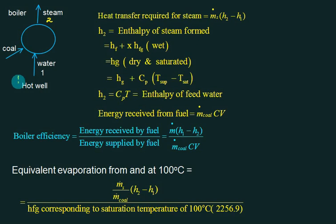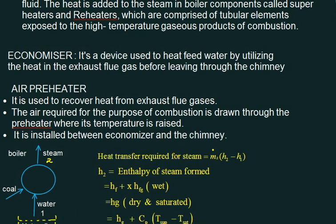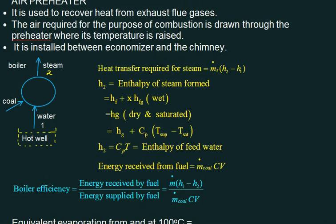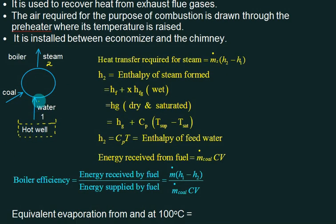The inlet is called the hot well, because the temperature at the inlet to the boiler is more than that of normal water — the economizer has raised the temperature, that is why it is called the hot well. From this we are pumping the water, and the water is converted into steam. Point 1 is inlet, point 2 is outlet, and coal is supplied with mass flow rate m_f. The heat transfer for the steam is m_s multiplied by (H2 minus H1).